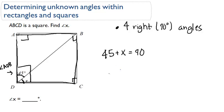We're going to solve for X. We subtract both sides by 45, and we're left with X equals 45 degrees.